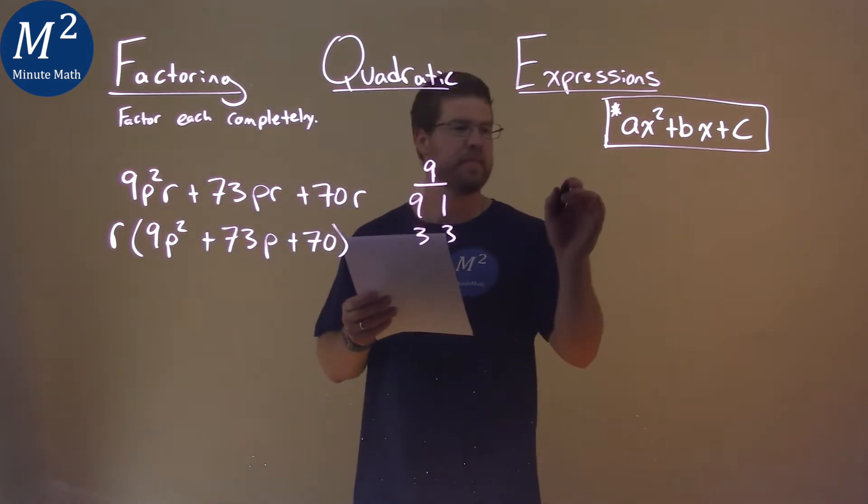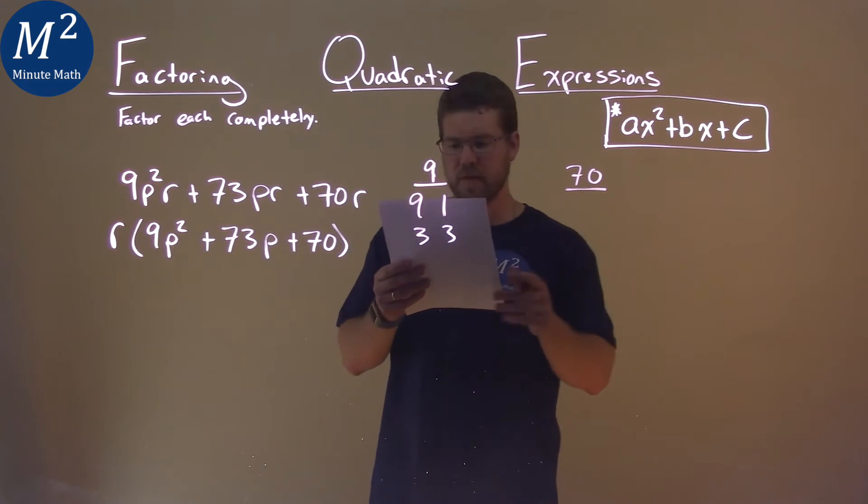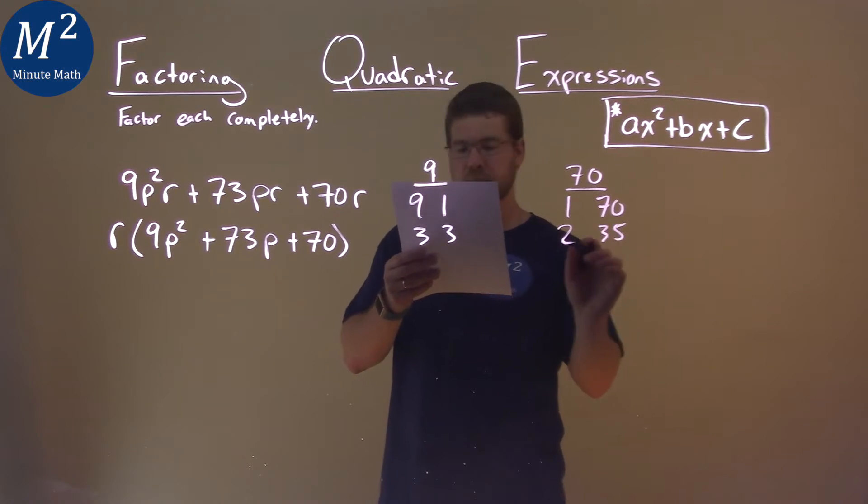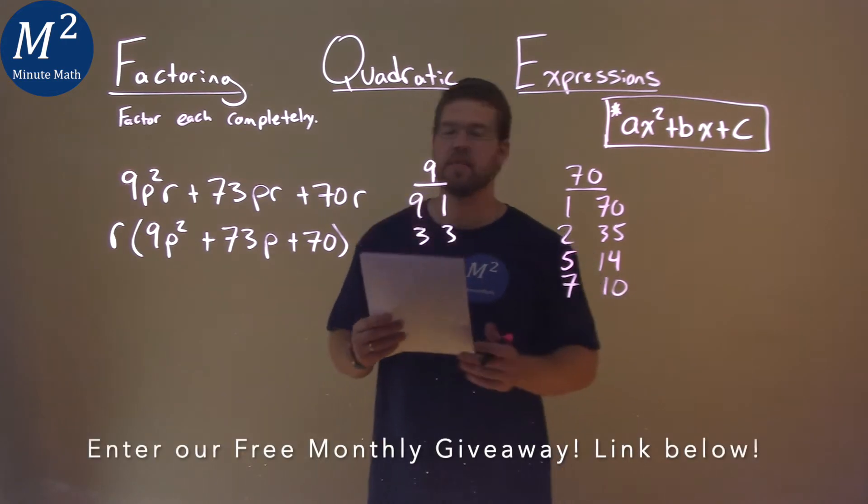Our c value is 70. The factor pairs are 1×70, 2×35, 5×14, and 7×10.